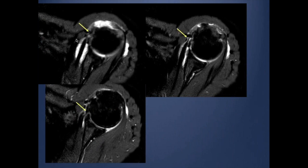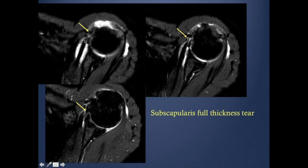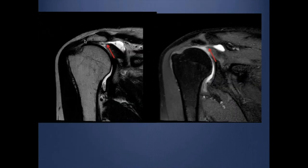Here is a case — after discussing the supraspinatus, infraspinatus, and teres minor, we move to the subscapularis tendon. In this case, you can see there is a full thickness, complete tear of the subscapularis tendon, as well as a full thickness tear of the supraspinatus in the same patient. This is when we call it a massive or major rotator cuff tear.